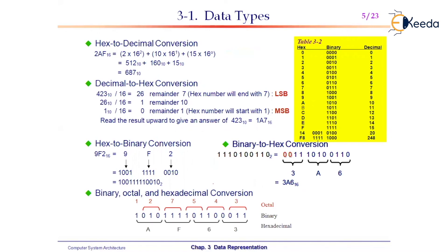Each hexadecimal digit has a corresponding weight that must be multiplied with that digit. For example, for 2AF: F (least significant digit) has weight 16^0; A has weight 16^1; 2 has weight 16^2. Multiply everything and add the values to form the result.